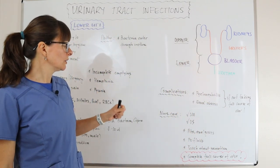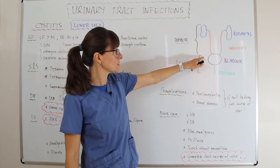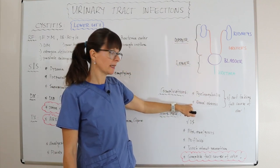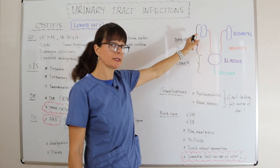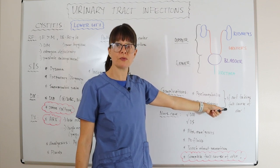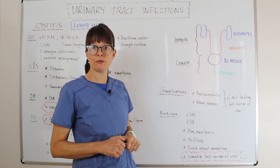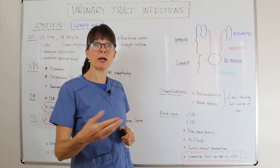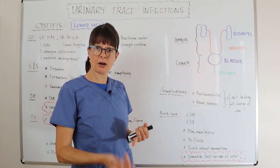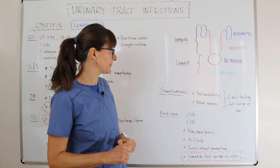If the urinary tract infection becomes more complicated, it can cause pyelonephritis — meaning the bacteria has traveled from the lower into the upper urinary tract causing a kidney infection. It can even progress to a renal abscess where bacteria accumulates in a spot in the kidney. This mostly occurs when the patient does not complete the full course of antibiotics. After about 48 hours on antibiotics the patient may feel better and stop taking them, but the remaining bacteria can become resistant and travel up the urinary tract causing serious complications.